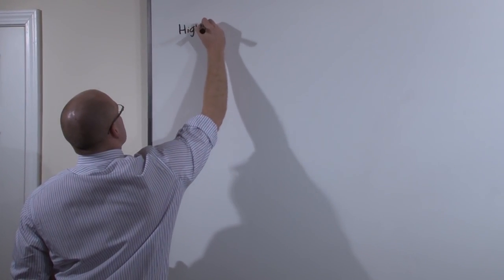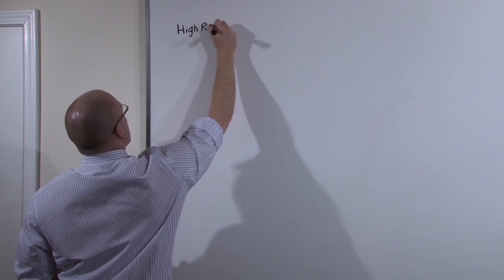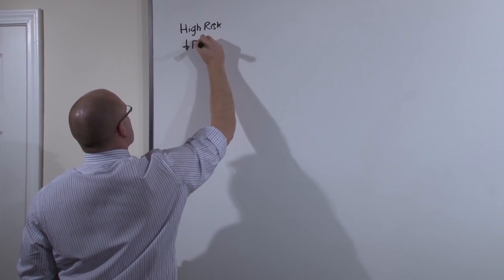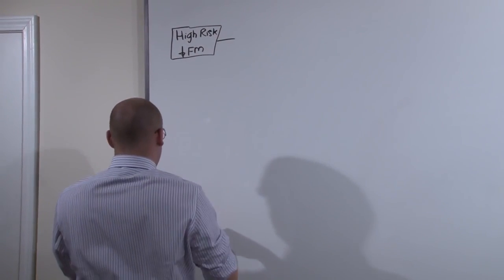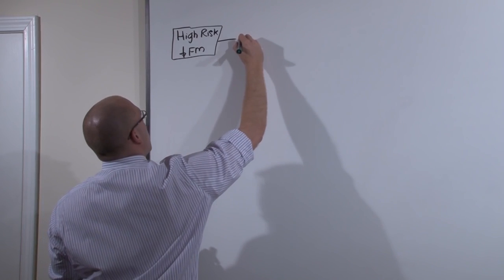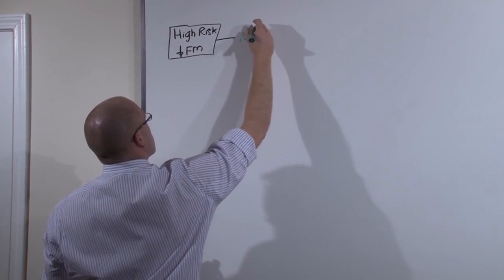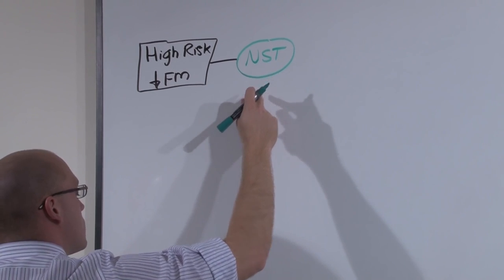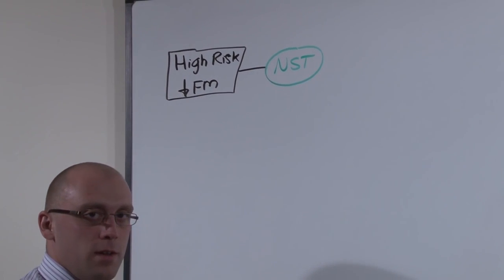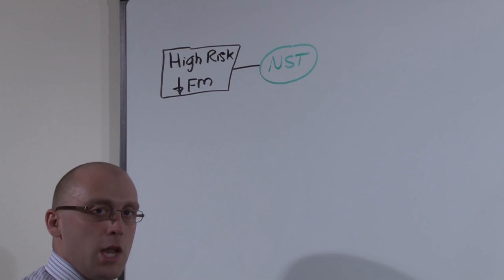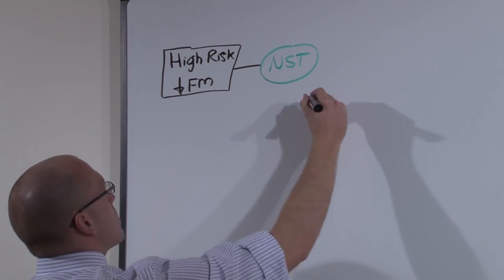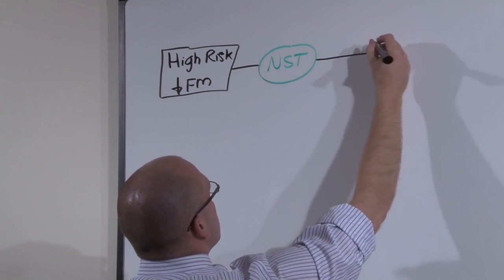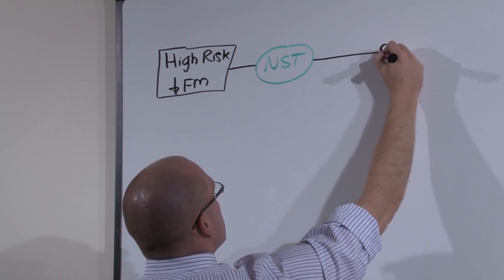Mom is going to come in either as a high-risk pregnancy or because she thinks baby is moving less — decreased fetal movement. The first test you're going to do is the non-stress test. All this does is assess baby's heart rate. What you're looking for is moderate variability and a normal rate. If you have that, it is said to be reassuring.